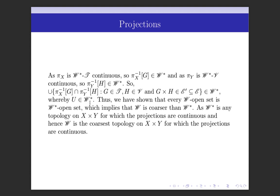We have taken U as a member of W and shown that U belongs to W*. So every member of W belongs to W*, which means every W-open set is W*-open. This implies W is coarser than W*. Since W* is any topology on X cross Y for which projections are continuous, W is the coarsest topology on X cross Y for which projections are continuous. Thank you.